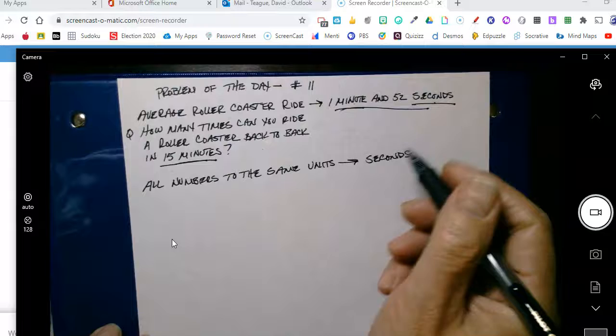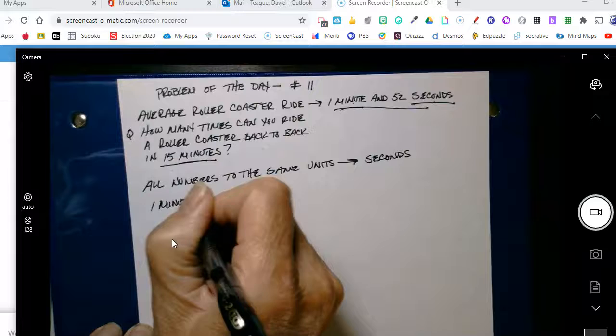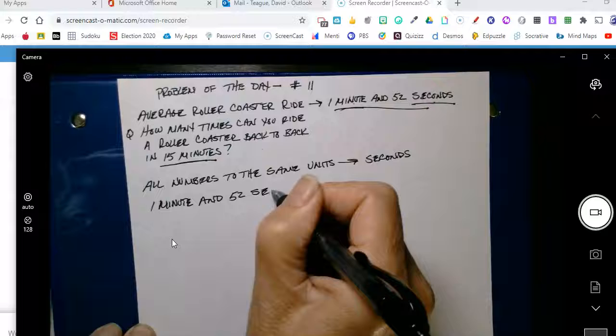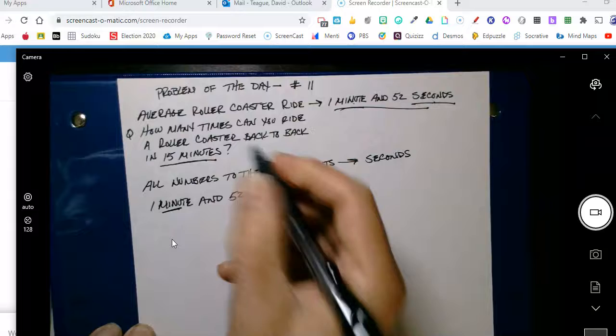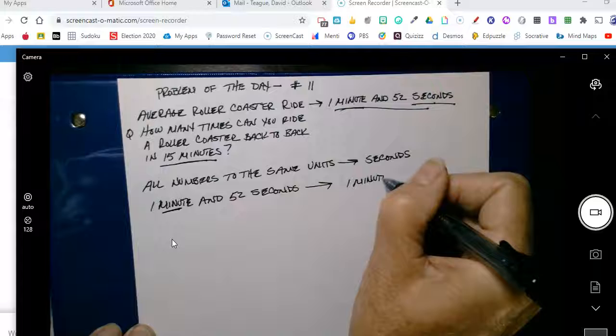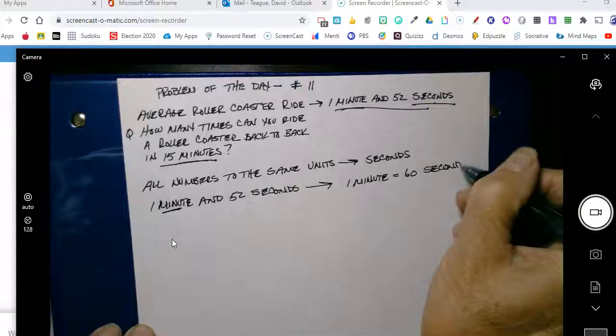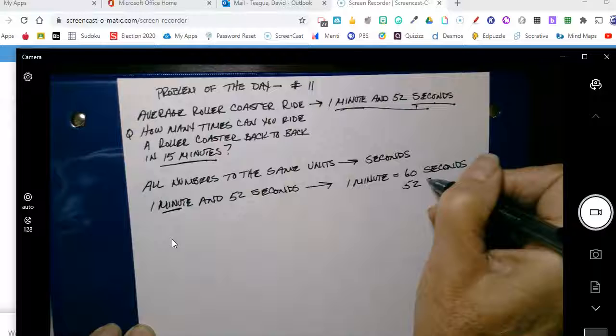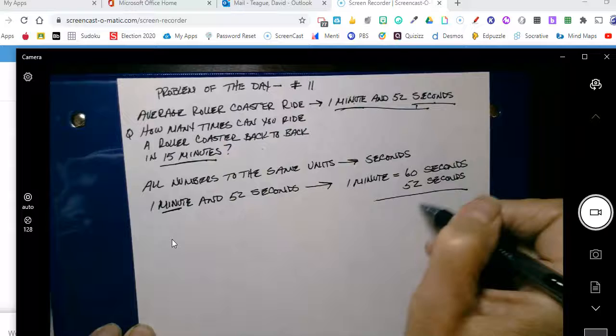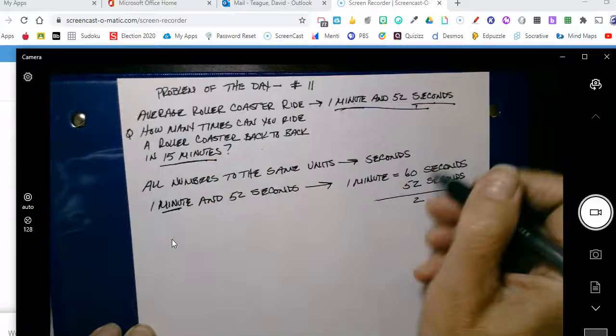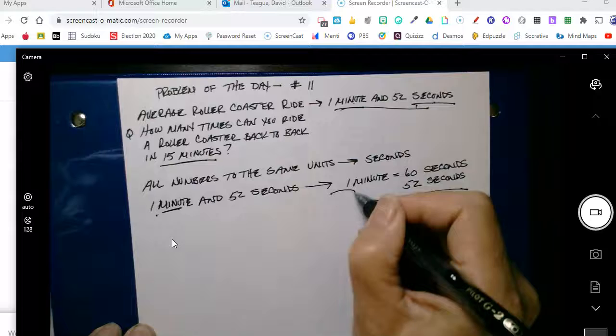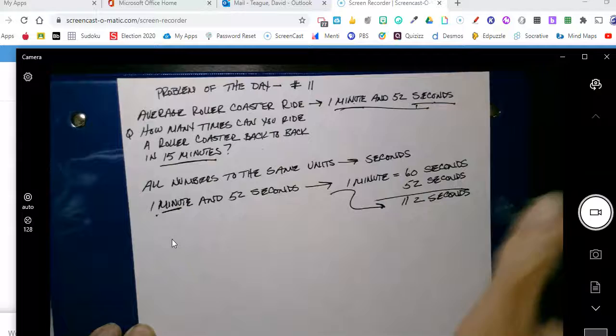So if I convert 1 minute and 52 seconds to seconds, I know that 1 minute is equal to 60 seconds. And this is already seconds, so I'm going to just put it underneath it, so that's 52 seconds. So then I'm going to draw a line. I'm going to add these up. So 2 plus 0 is 2, 6 plus 5, that's 11. So now I know that 1 minute and 52 seconds is equal to 112 seconds. That's the same thing. I just converted it down to seconds.